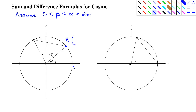We know the coordinates of P1 because we're on a unit circle. The x-coordinate is the cosine of the angle, so it's cosine of beta. And the y-coordinate is the sine of the angle, so it's sine of beta. Next, the point in the second quadrant is on the terminal side of the standard position angle alpha. So the x-coordinate is cosine of alpha and the y-coordinate is sine of alpha.